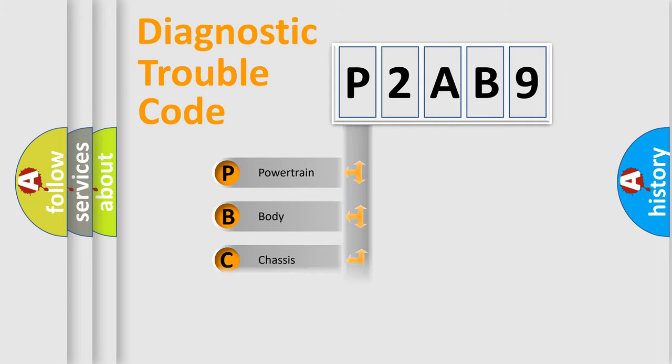Powertrain, Body, Chassis, Network. This distribution is defined in the first character code.